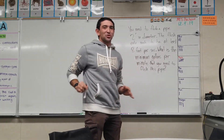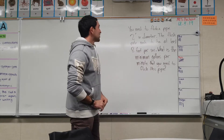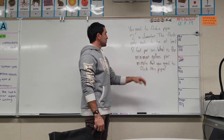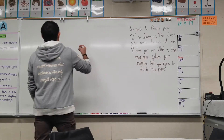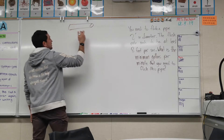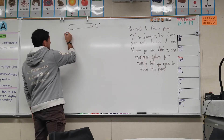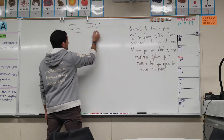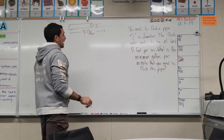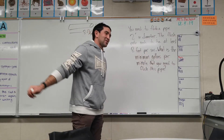It kind of throws you through a loop, but it's fun. So check it out: you need to flush a pipe that's two feet in diameter. The flush rate needs to be at least eight feet per second. What is the minimum gallons per minute that you need to flush this pipe? So you have a pipe that is two feet in diameter and you need it flushed at eight feet per second.